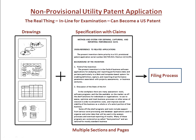The non-provisional application includes drawings and a specification following very specific requirements. The specification also includes a set of claims that recite exactly what you, the inventor, believe to be the patentable features of the invention.